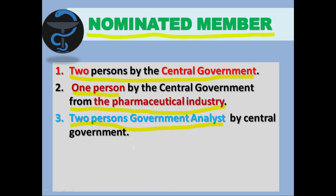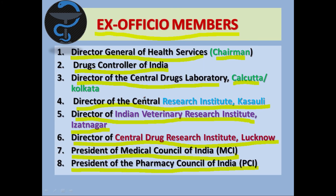Now let's review the key points to remember. First, the chairman of DTAB is the Director General of Health Services. Second, the Central Drug Laboratory is in Kolkata. Third, the Central Drug Research Institute is in Lucknow. We should especially focus on the ex officio members, as many questions from this topic arise in government exams such as GPAT, pharmacist exams, and drug inspector exams.